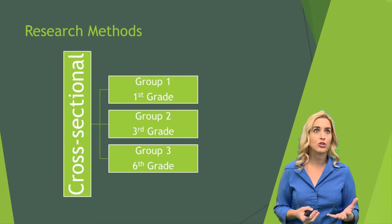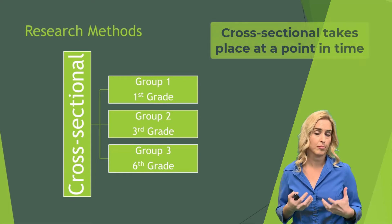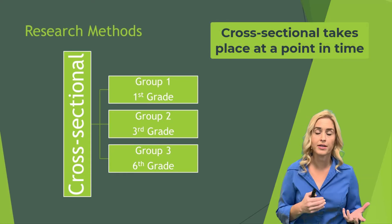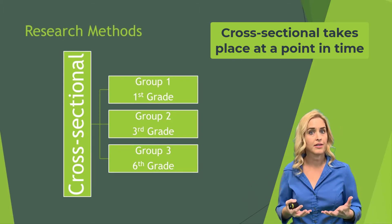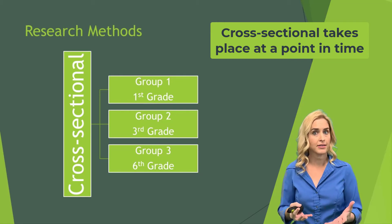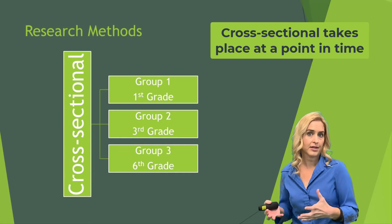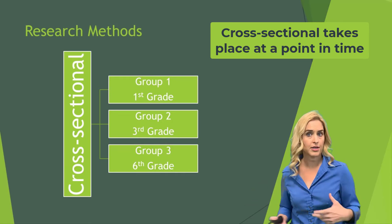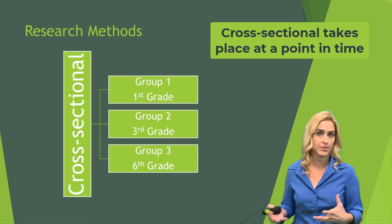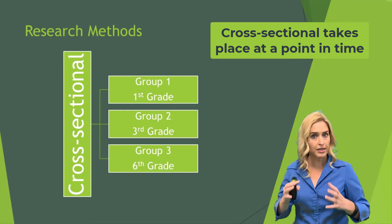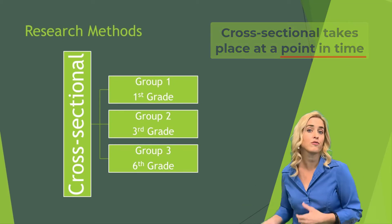So a cross-sectional study would be, for example, wanting to study the differences in reading ability — qualitatively and quantitatively — as children go through elementary school. I study reading levels and go into a first grade class and give them a reading test, then go into a third grade class and give them the same kind of reading test, and later go to a sixth grade class and give them the same type of test. So cross-sectional research is done at one point in time with three different groups of people.